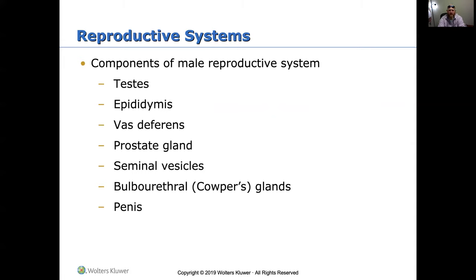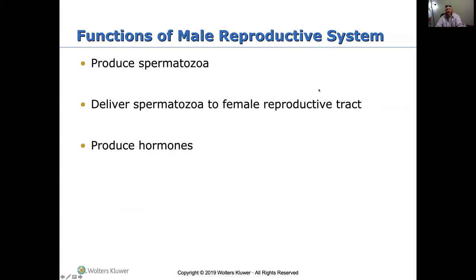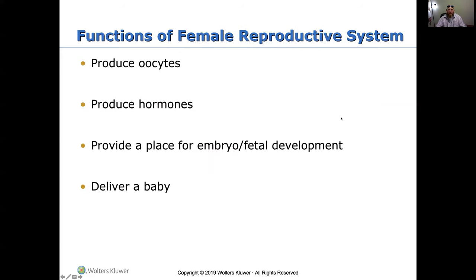The reproductive systems don't play a lot into what we'll cover this semester, so quickly: the male reproductive system components include testes, epididymis, vas deferens, prostate gland, seminal vesicles, bulbourethral glands, and the penis. The female system includes ovaries, fallopian tubes, uterus, vagina, and external genitalia. The male system's functions are to produce sperm (spermatozoa), deliver spermatozoa to the female reproductive tract, and produce hormones. The female system produces oocytes and hormones, provides a place for embryo and fetal development, and delivers babies.